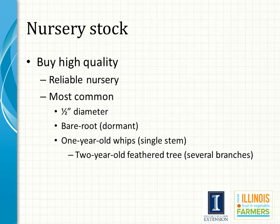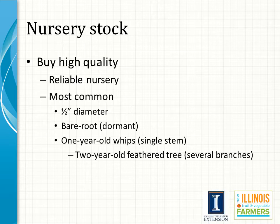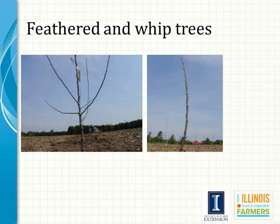To increase your chance of success, buy high-quality plants from a reliable nursery. The most commonly sold stock are one-half inch diameter, bare root, one-year-old whips — a whip refers to a single, unbranched stem. Nurseries sometimes sell two-year-old trees that may have several branches, sometimes called feathers. These types of stock usually perform better than larger and older trees because small trees are easier to transplant and train to a desired shape. When ordering, request that plants arrive before growth starts to prevent damage from shipping.